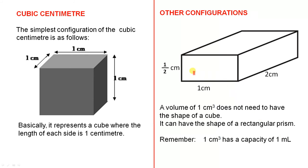One cubic centimetre. The simplest configuration of the cubic centimetre is as follows: it is a cube measuring one centimetre by one centimetre by one centimetre. Basically it represents a cube where the length of each side is one centimetre.